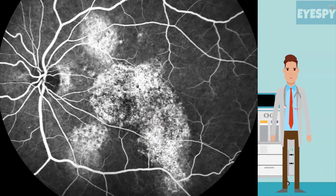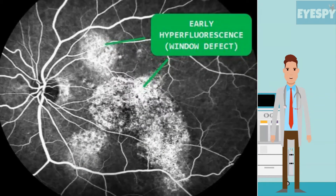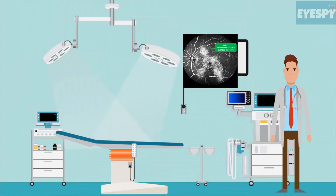FFA is a classic imaging technique for CSCR evaluation, and in this case shows early mottled hyperfluorescence due to a window defect because of RPE atrophy.